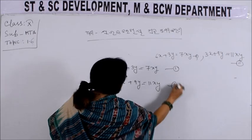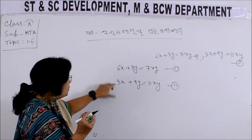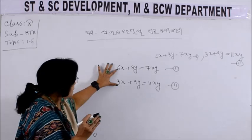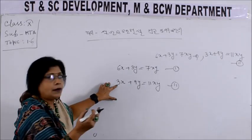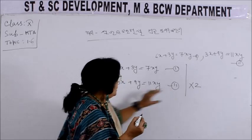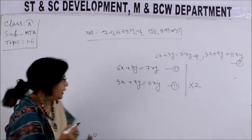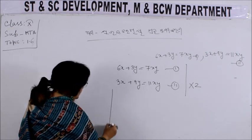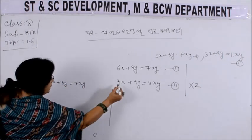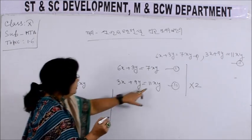Equation 1, equation 2. We can do x plus 3y. So we can do x plus 3y is equal to 7xy. 2x plus 9y is equal to 11xy.